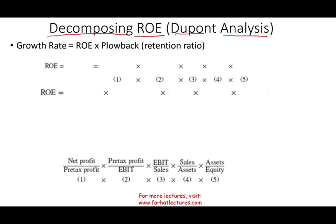Let's go ahead and decompose the important ratio: return on equity. Simply put, return on equity is net profit divided by equity — how much profit the company made divided by equity. For example, if the company made $100 in income and they have $10,000 of equity, return on equity equals 10%. This is the most basic formula for return on equity.